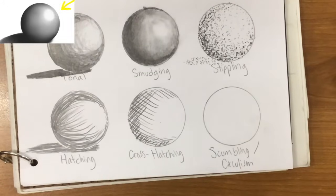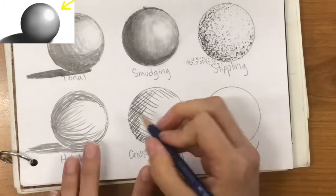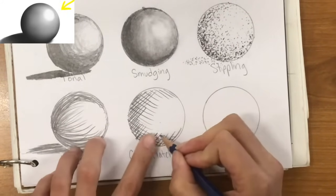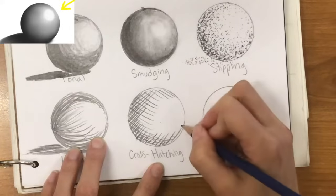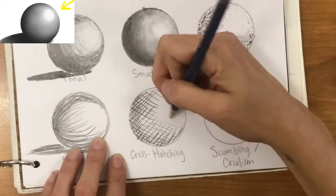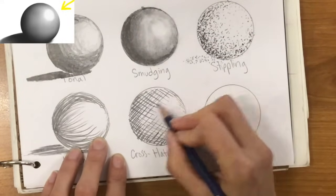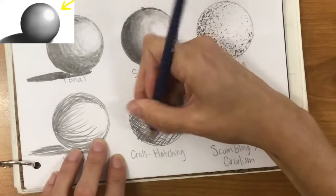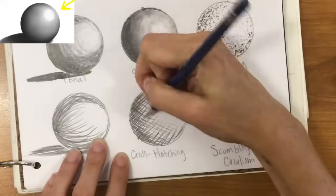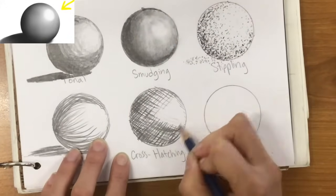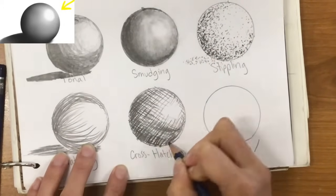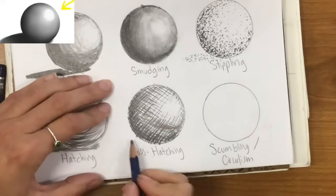I'm going to switch over to my 2B pencil. My 4B pencil is a little soft for this. And the further apart you space your lines, the lighter it's going to look. The closer you lay your lines together, the darker it's going to look. And then same thing with the shadow.